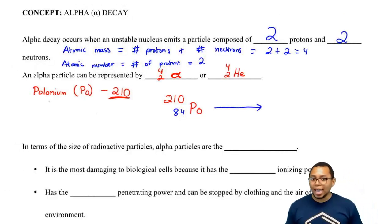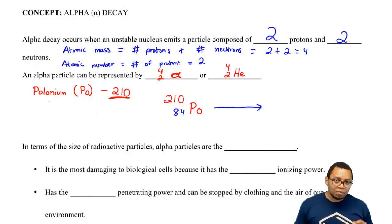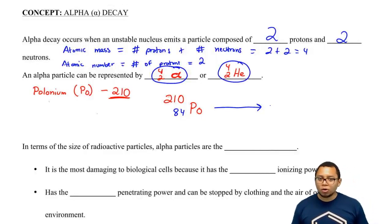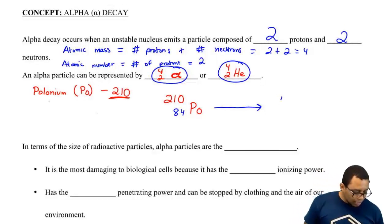Now we're going to undergo alpha decay. Alpha decay means we're going to spit out or emit an alpha particle. You can represent it as alpha or as helium. Here I'll just choose to show it as helium. So we're going to emit 4 over 2 helium.